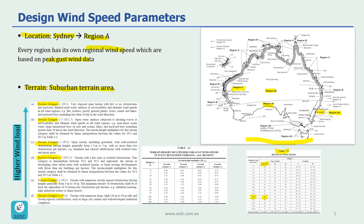I have decided that my terrain category is terrain category three, because as per the description it says terrain with numerous closely spaced obstructions having height generally from 3 to 10 meters. The minimum density of obstructions shall be at least equivalent to 10 house-size obstructions per hectare — e.g., suburban housing, light industrial estates, or dense forest.